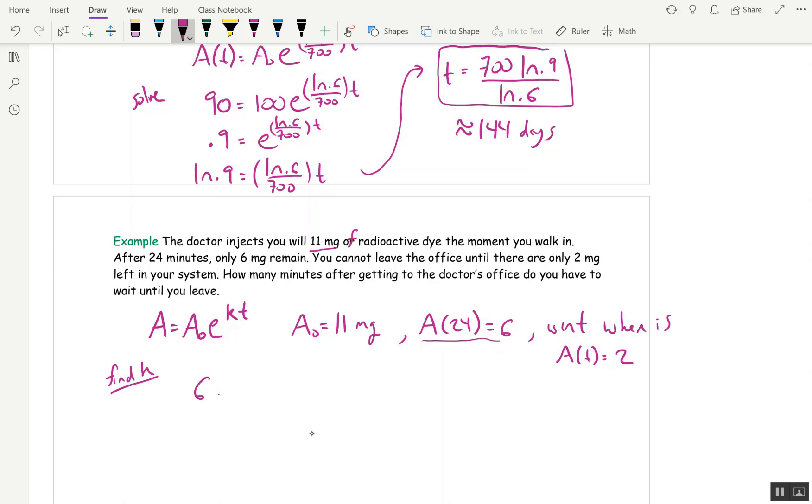And the way we're going to find k is by using A of 24 is 6. So 6 milligrams is A₀, which is 11, which is 11e to the 24k. Because t is 24. All right. So divide both sides by 11. You can't take natural log at this point. 6 over 11 is e to the 24k. Now take log of both sides.